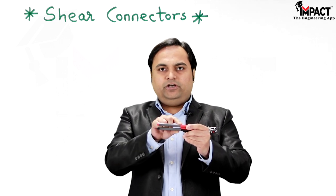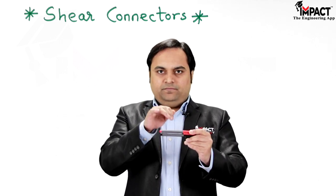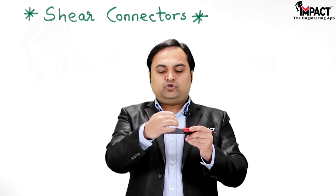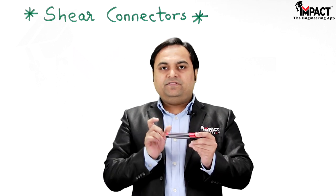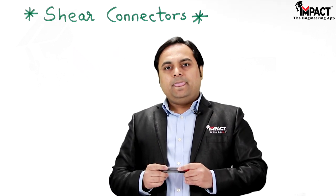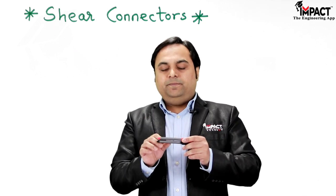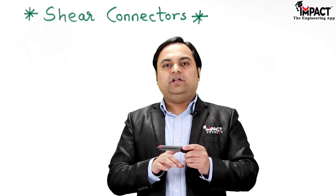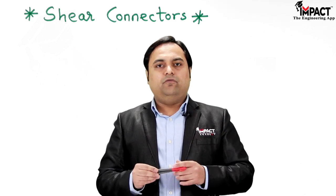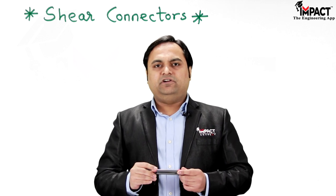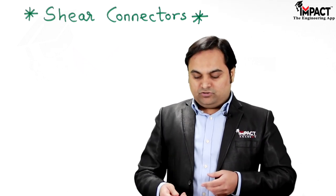The distance at which the nails or bolts should be placed is called the pitch. In the case of shear connectors, we need to know this pitch so that depending upon that spacing we can join or connect two sections — which can be similar, like a wooden section, or different, like a combination of wood and steel — which we call composite materials.